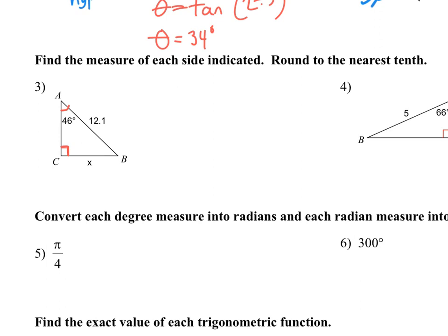If the 46-degree angle is here, the opposite side length is the one all the way across, and the 12.1 side is the hypotenuse because it is across from the 90. So same kind of thing — SOHCAHTOA still. This time we know the angle measure, though. If it's opposite and hypotenuse, that's going to be sine. Now we know the angle measure is 46 degrees, so the variable is going to be on the other side of the equation. Sine is always opposite over hypotenuse, so it's x over 12.1.